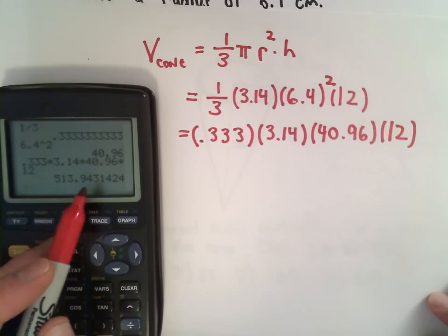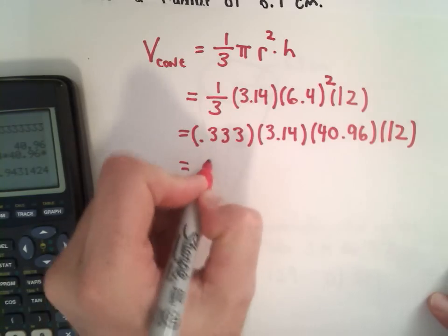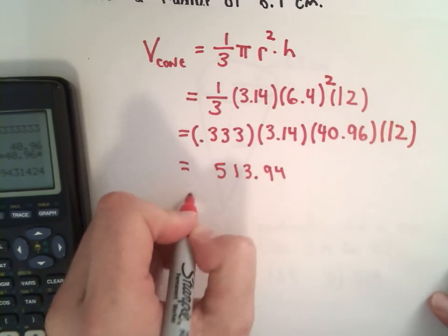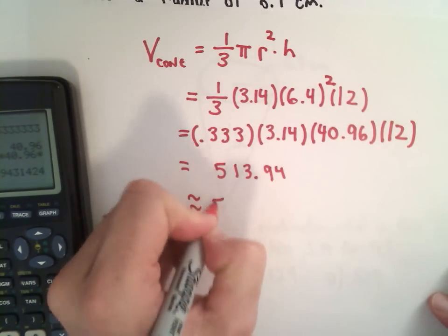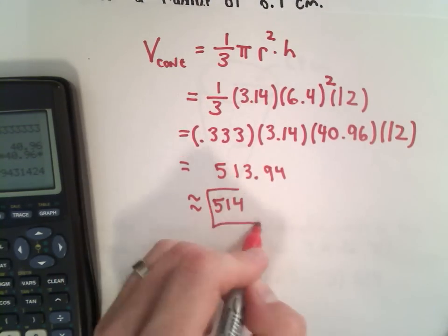So 513.94, that's almost equal to, so 513.94, that's almost equal to 514 cubic centimeters. So it looks like answer choice D will be the correct choice for this one.